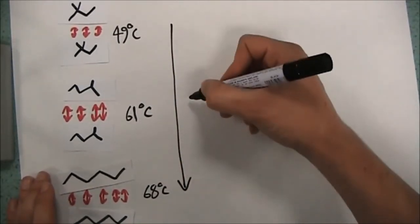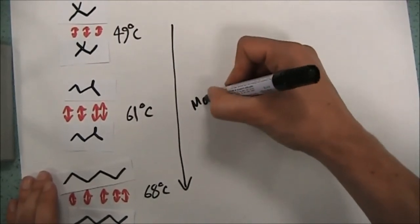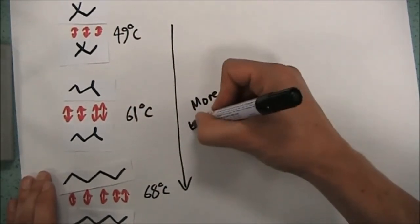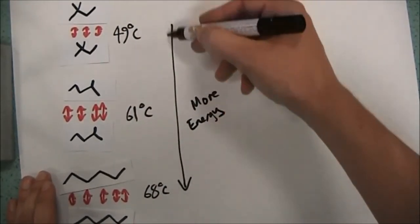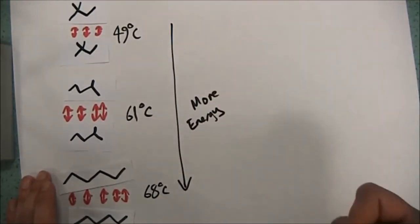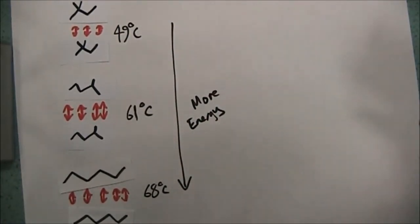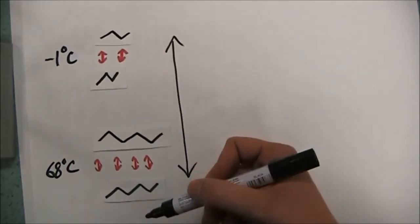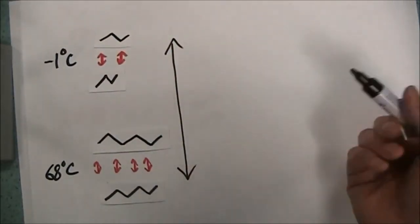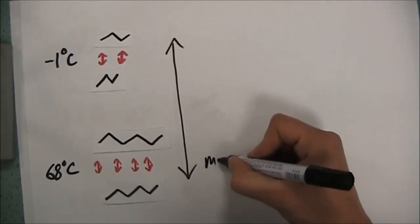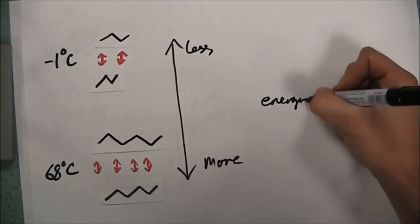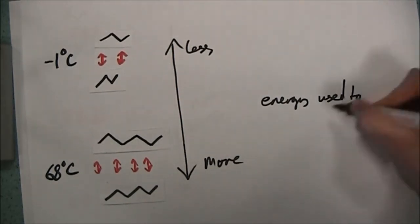An important point is that when we're looking at higher boiling points, we're looking at a measure of the energy needed to separate the molecules. More energy is needed to separate molecules with stronger forces of attraction, and less energy is needed when those forces are weaker. This applies to both chain length and degree of branching — the boiling point is a measure of the energy needed to separate the molecules.